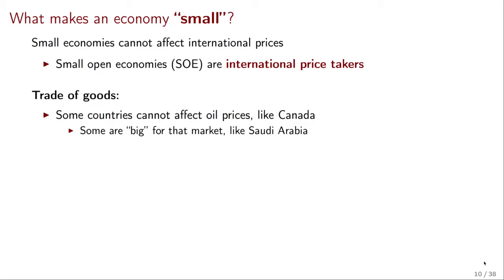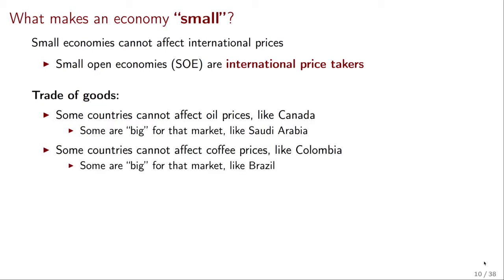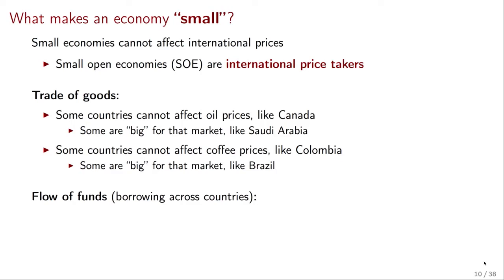This also happens in many other markets. For instance, coffee planters in Colombia cannot affect coffee prices, but the Brazilian coffee market is large enough that when something happens there — like bad weather — it can affect international coffee prices. The second sense in which small open economies are international price takers is with respect to the flow of funds across countries. This is borrowing across countries, and it is particularly important — it's actually what makes small open economies different from the point of view of the models we'll develop.